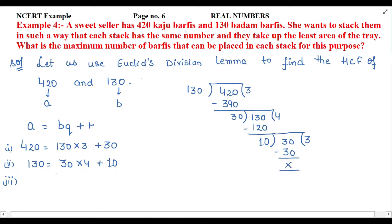So we can write 30 = 10 × 3, remainder is zero. Now the remainder has become zero, so this process stops here. The last divisor that we get is the HCF of the two values a and b. The last divisor is 10.